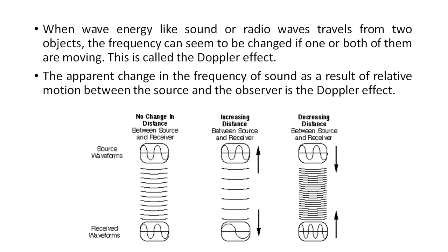What is the Doppler effect? Whenever wave energy like sound or radio waves travels between two objects — one being the source and the other the observer — there is a frequency shift observed by the observer whenever there is relative motion between the source and the observer. This is called the Doppler effect, and it causes a frequency shift that is directly related to the relative motion of the source and the observer.